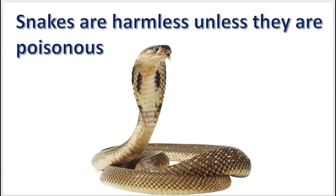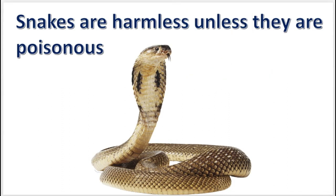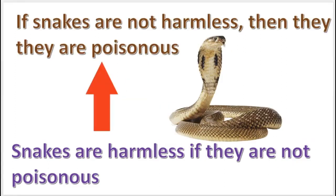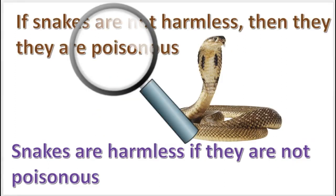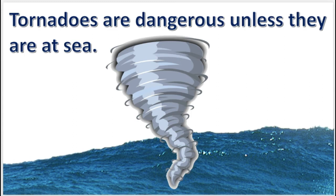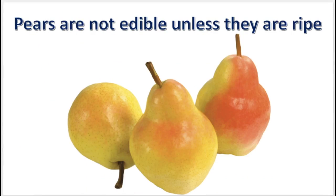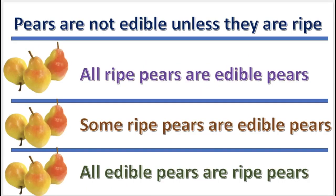Statements containing the word 'unless' can be changed into conditional statements. 'Unless' means 'if not.' For example, we first change the word 'unless' to 'if not,' and then it can be correctly translated. For the first practice problem, this is the correct translation. For the next practice problem, this is also the correct translation.